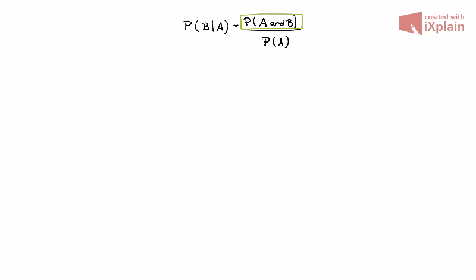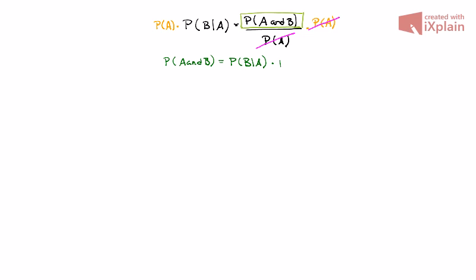We can actually take the definition for conditional probability and rewrite it using algebra. I'm going to isolate the probability of A and B to one side of this equation by multiplying both sides by the probability of A. The probability of A in the denominator will cancel with the probability of A in the numerator. This results in the following definition: the probability of event A and event B happening is equal to the probability of B given A times the probability of A.